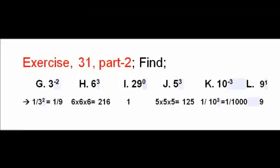Exercise 31, Part 2. Find Exponent Values of G, H, I, J, K, and L. Their answers are 1/9, 216, 1, 125, 1/1000, and 9 respectively. See Image.